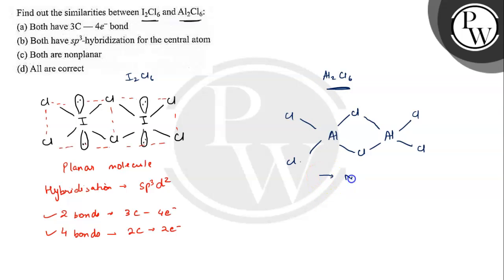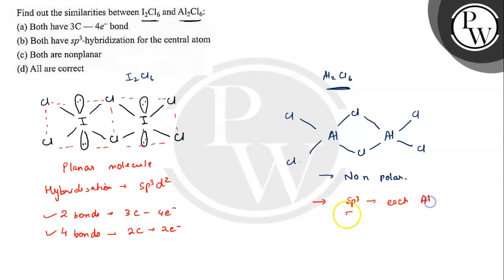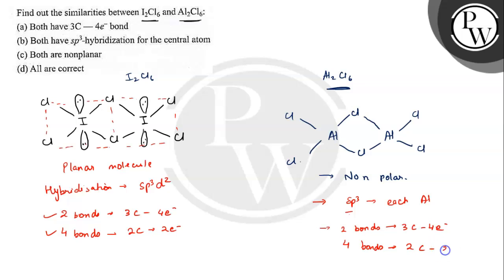If we check, Al2Cl6 is a non-polar molecule, but I2Cl6 was a polar molecule. If we check the hybridization of Al2Cl6, each aluminum is Sp3 hybridized. And the types of bonds found are: two bonds are three-centered four-electron bonds, and four bonds are two-centered two-electron bonds.